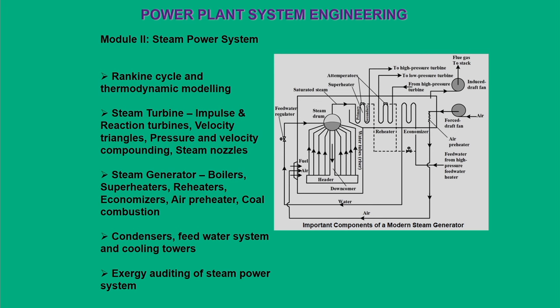Module 2 is mainly on steam power systems, and most lectures in this module are based on power generation through steam. Although learners have a basic idea of harnessing power from steam through Rankine cycle modeling — topics covered at the basic UG level — in this course I will emphasize what has been covered in the basic courses and what is new in this particular segment.